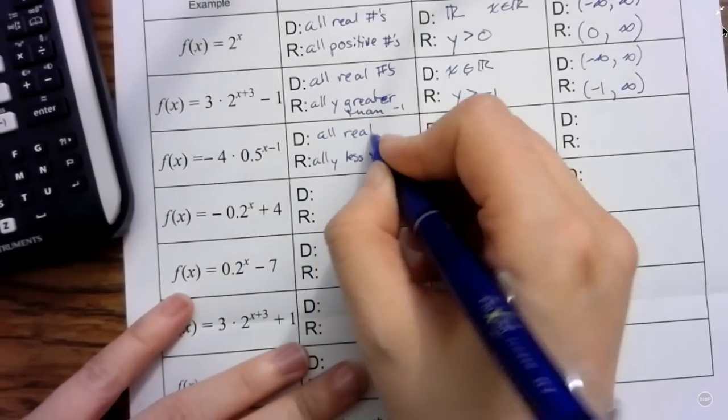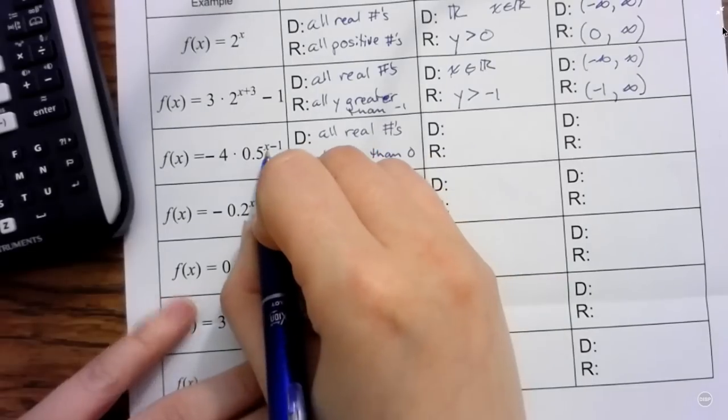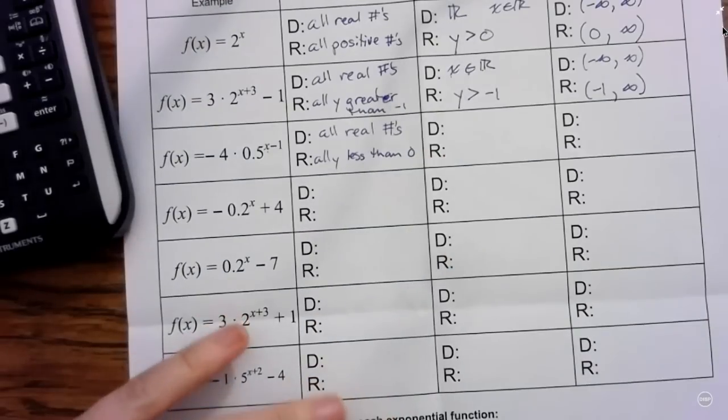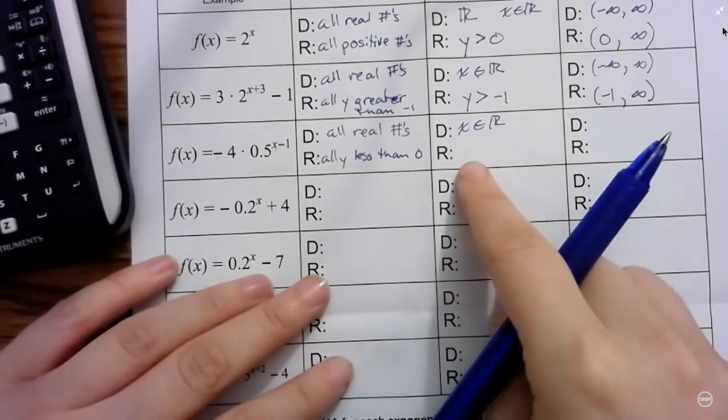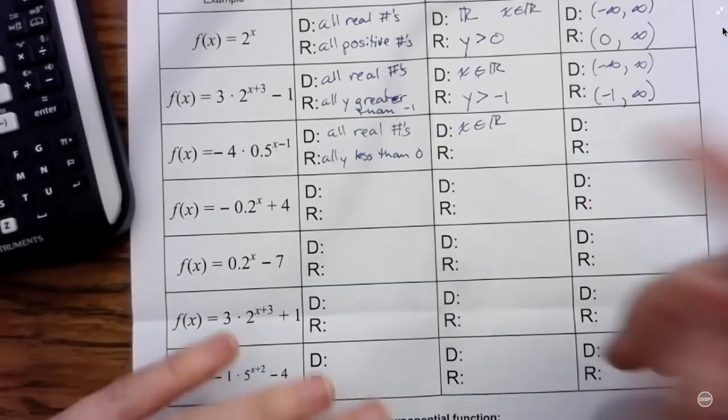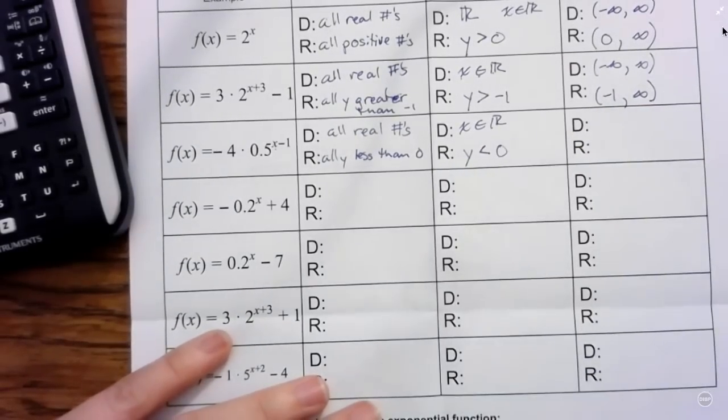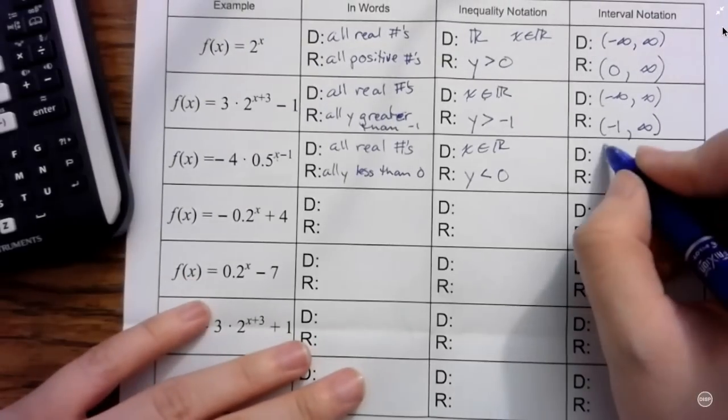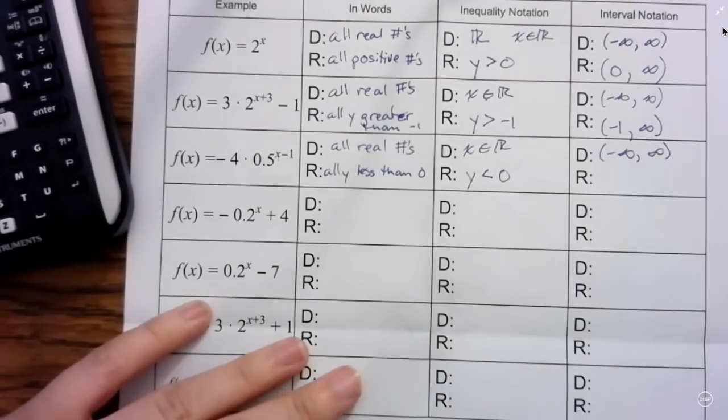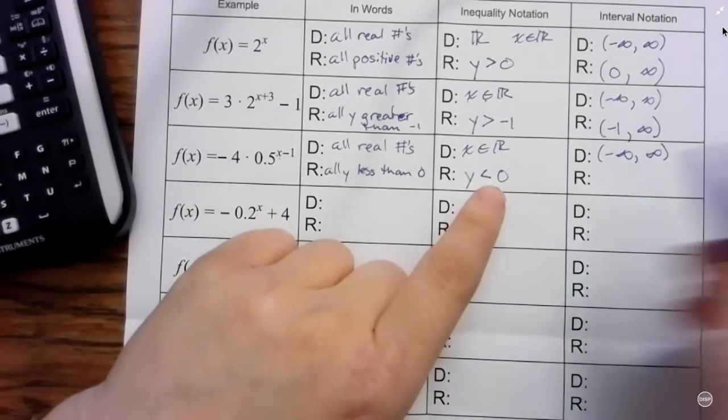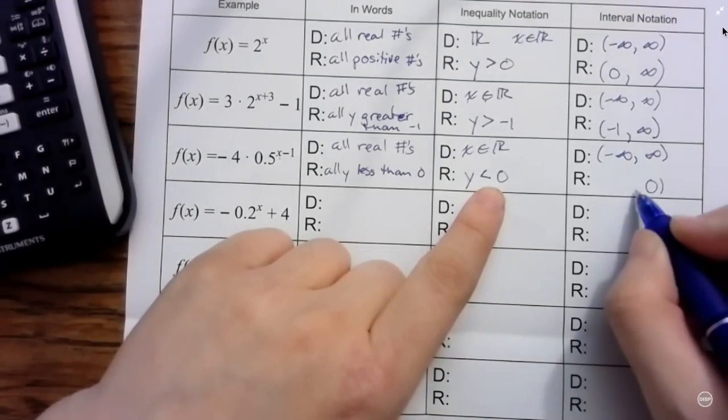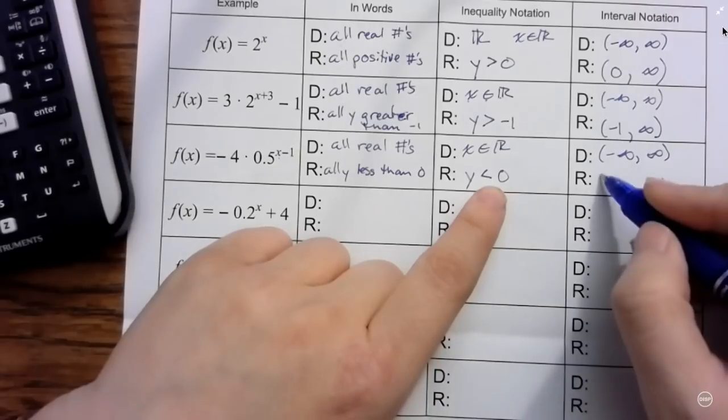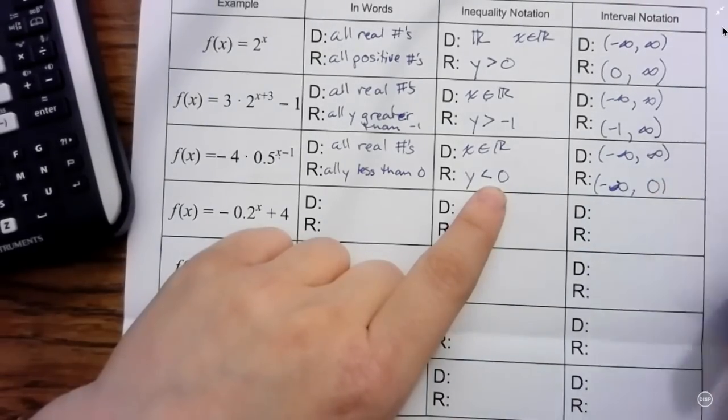My domain is still all real numbers for the same reason as before. There's no x I could possibly put here that would give me an undefined y value. So any x value will work. X is an element of the real numbers. So now, since my y's are less this time, I want to put y is less than zero. And in interval notation, I still have negative infinity to positive infinity. This time, since I'm going below zero, my maximum is zero, not included, so just with a round parentheses. And I can go as low as I want. So my y values will keep going down. So I want to say negative infinity to zero for my range.